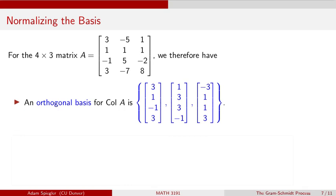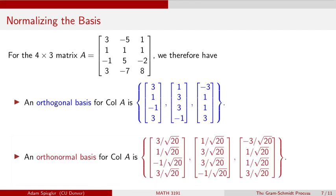We found an orthogonal basis for the column space of A given by the three vectors (3, 1, −1, 3), (1, 3, 3, −1), and (−3, 1, 1, 3). Orthonormal bases are even nicer than orthogonal ones, so if we want an orthonormal basis, we have one additional step. Since these vectors are already orthogonal, changing their lengths won't affect the angles between them, so it won't affect orthogonality. We simply normalize each vector by dividing by its length.